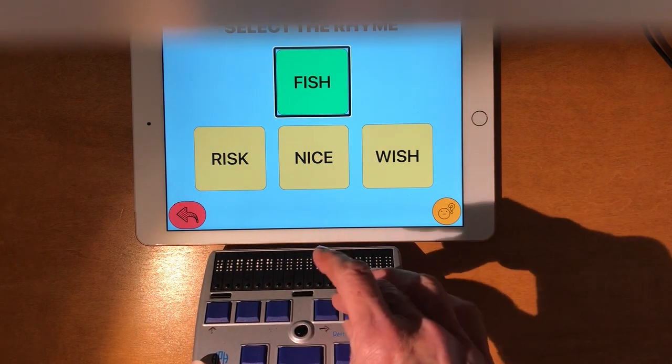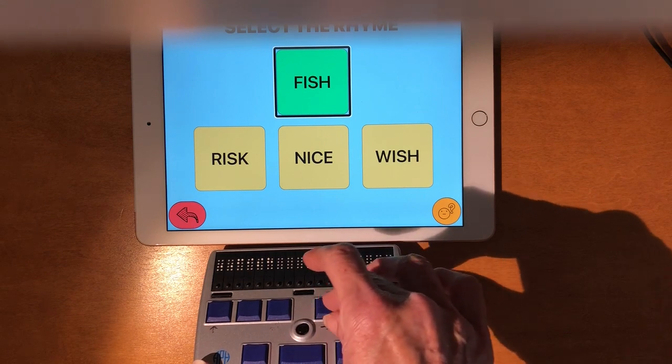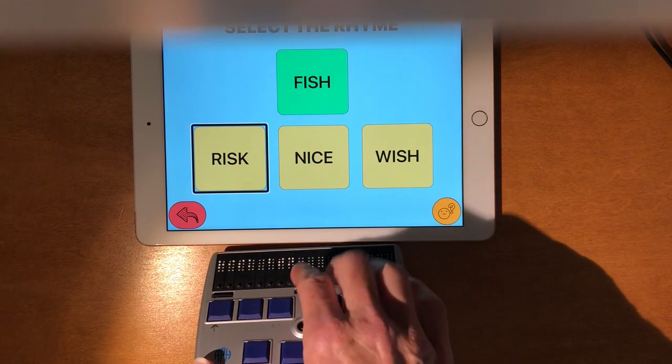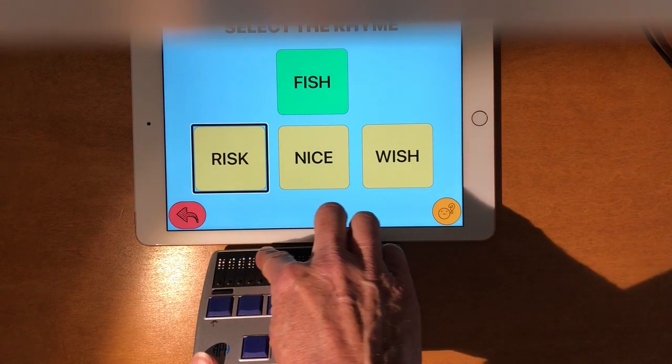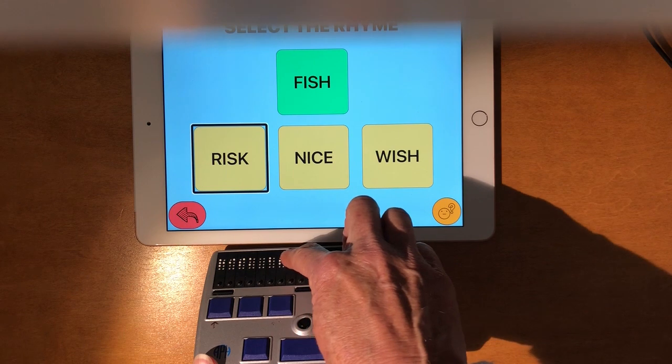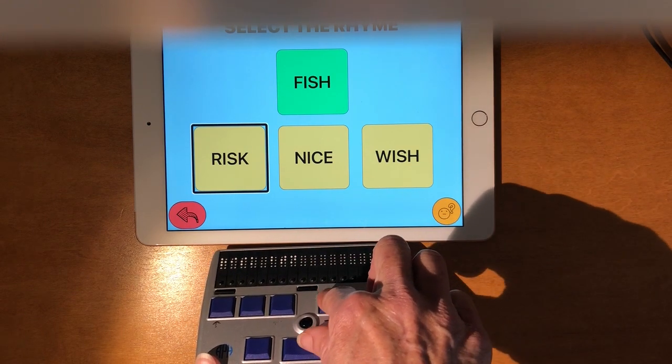And then I am going to do joystick right, or I'm going to do dot four space. Now, I have to read it. It's not telling me what's there. So it has risk. And then it says btn for button.